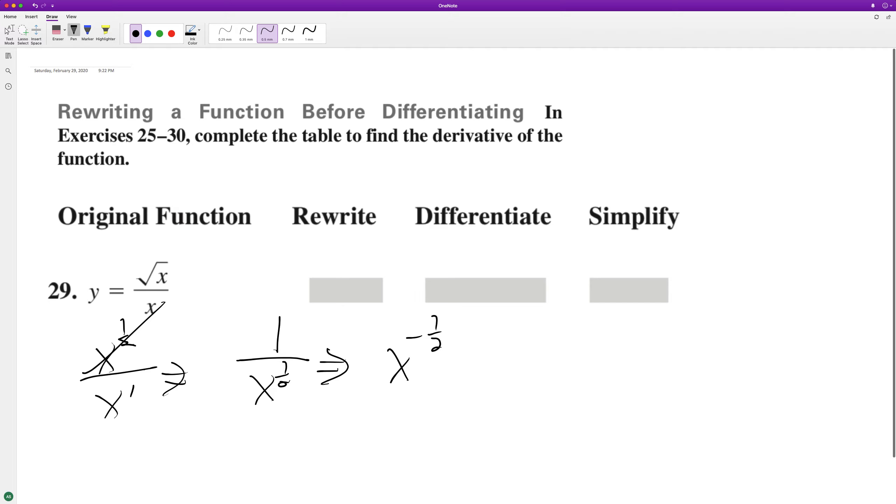And when we differentiate this, we can pull down the negative 1 half, and then subtract 1 from this, we get negative 3 halves.